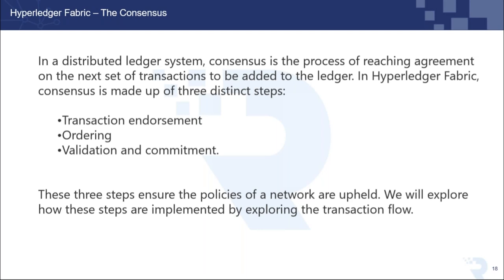In Hyperledger Fabric, consensus is not a single function — it is a process involving three steps: endorsement, ordering, and commitment. When someone posts a transaction, the data is sent to all peer nodes, which put their signature on it agreeing to the transaction. It is sent back to all peers, and there will be different time delays from each peer. An orderer takes care of the order in which transactions are posted. Once ordering is confirmed, it is added to the blocks in the blockchain as the final step.